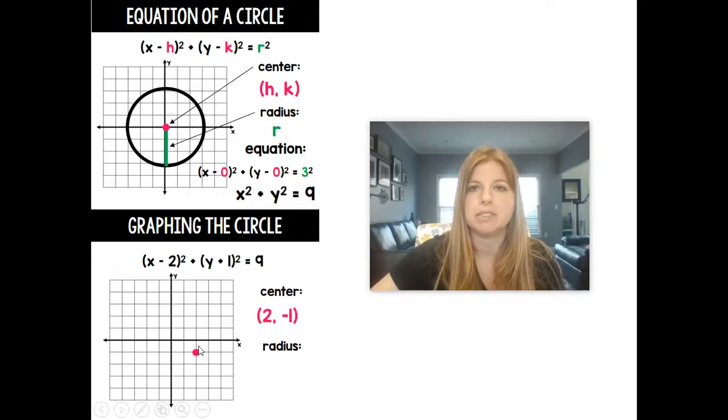So I would be able to plot my center at 2, negative 1. I would then look at this number here for the radius. Now notice, see how it was equaling 9 here? The radius is not 9. It's actually whatever the square root of 9 is. So we agree that the radius here was 3, and so the radius there would be 3.